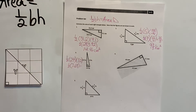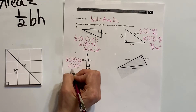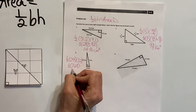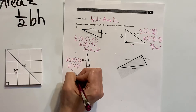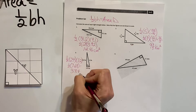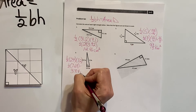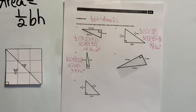Half of 7.68 gives me the area. Half of 7 is 3, and then with the remainder we get 3.84 inches squared. You can check that with your calculator.